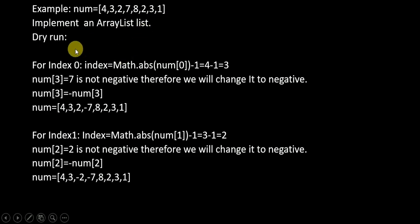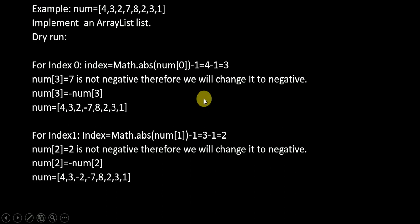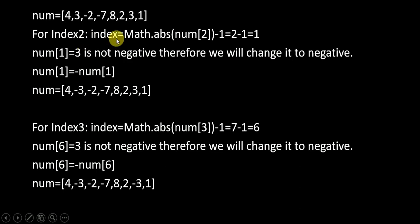Let's see the dry run with array 4 3 2 7 8 2 3 1. For index 0, we find the absolute index by taking element at index 0 minus 1, which is 4-1 = 3. We check whether the element at index 3 is negative — it is not, so we change it to negative: nums[3] = -nums[3]. For index 1 we apply the same procedure. For index 2, element at index 2 is 2, so absolute index is 2-1 = 1; element at index 1 is not negative so we change it to negative.